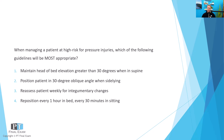When managing a patient at high risk for pressure injuries, which of the following guidelines will be most appropriate? One: maintain head of bed elevation greater than 30 degrees when in supine. Two: position patient in 30 degree oblique angle when side lying. Three: reassess patient weekly for integumentary changes. And four: reposition every one hour in bed, every 30 minutes in sitting.